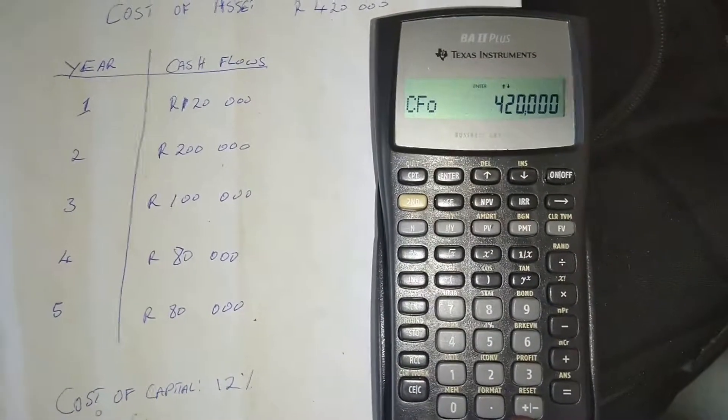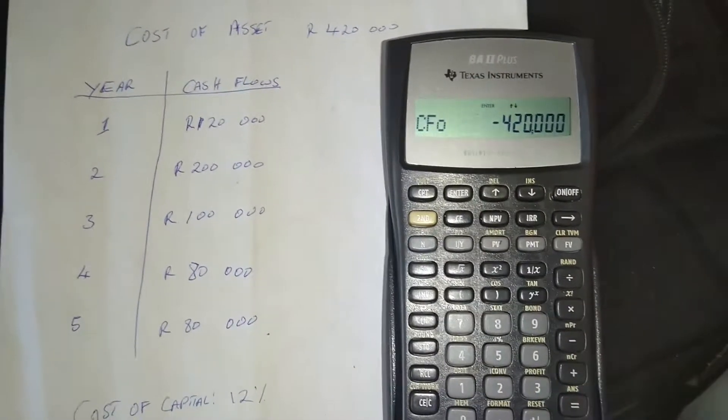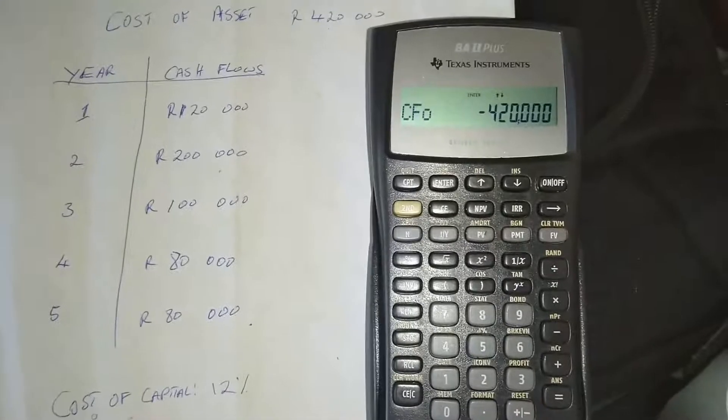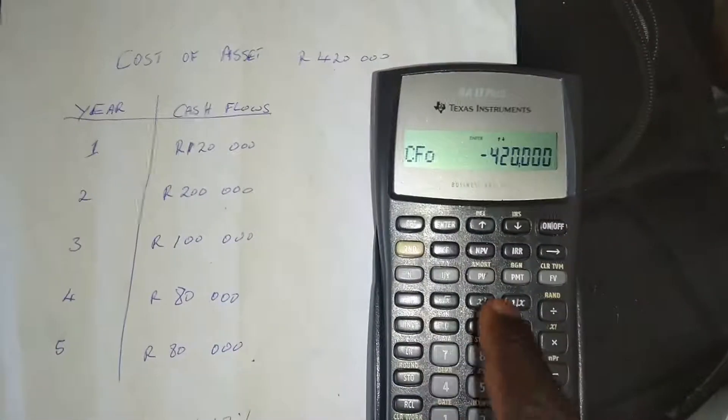So that's the first thing we do 420,000. Make sure you put it as a negative, you press this plus slash minus sign, you don't press this minus here, you press the plus minus sign. If I press it again, it's going to be positive. But you press this one here to ensure that it's a negative. And then you press enter.